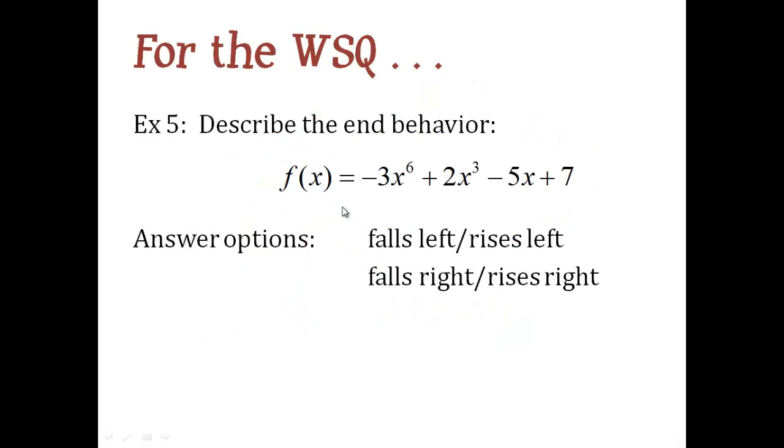So for the WSQ, you're going to take this equation. You're going to describe for me the end behavior in words. Remember, you're only looking at the highest exponent and its coefficient. And that will determine what are the two arms of your graph doing. Going the same direction, opposite direction, falling right, rising right. Go back to that table that we did a few slides back. And you should be able to interpret that. And we'll work some more on multiplicity in class. But please come prepared with questions if you have them.